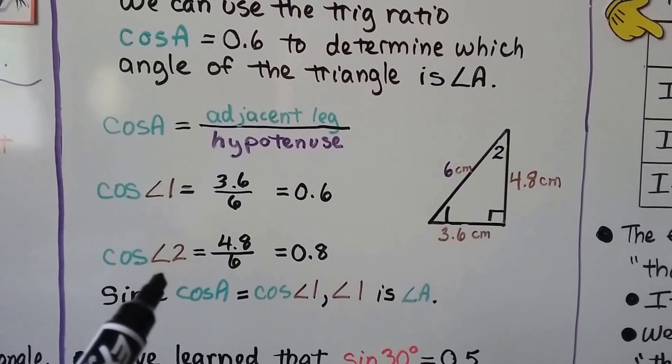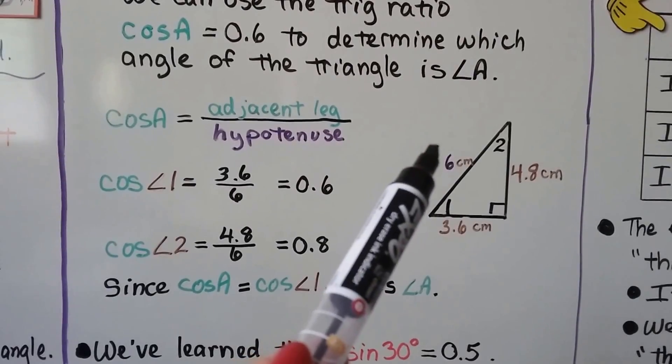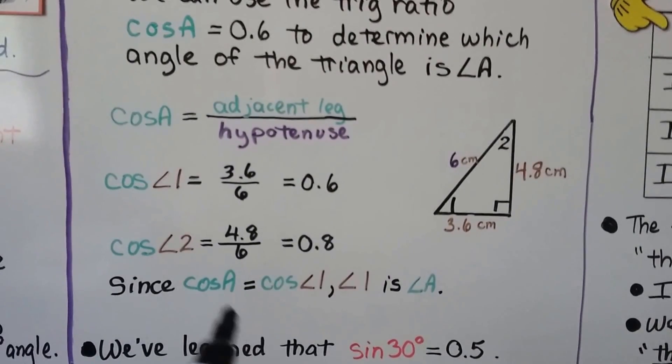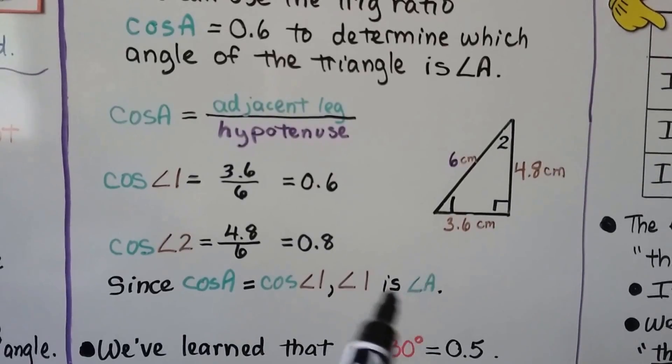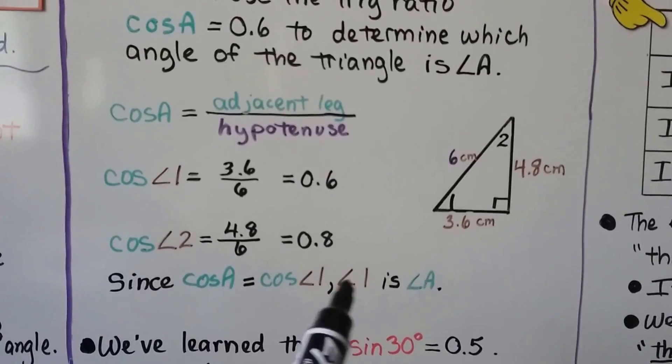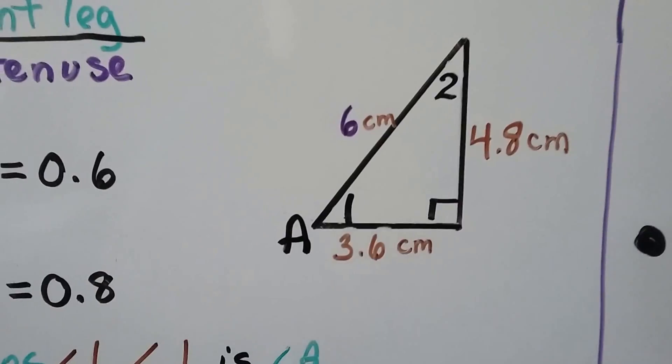If we tried doing the cosine of angle 2, the adjacent leg is 4.8, putting that over the hypotenuse of 6, we would get 0.8. So we know that the cosine of a is equal to the cosine of angle 1, so angle 1 is a.